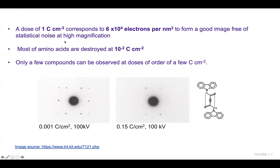Typically, to get a good image with low statistical noise at high magnification, a dose of one coulomb per centimeter square is necessary, which corresponds to about 600,000 electrons per square nanometer. Unfortunately, most amino acids are destroyed by at least two orders of magnitude lower than what we generally need to get a high magnification image with low noise. Only a few compounds can be observed at doses of order of three coulombs per centimeter square.